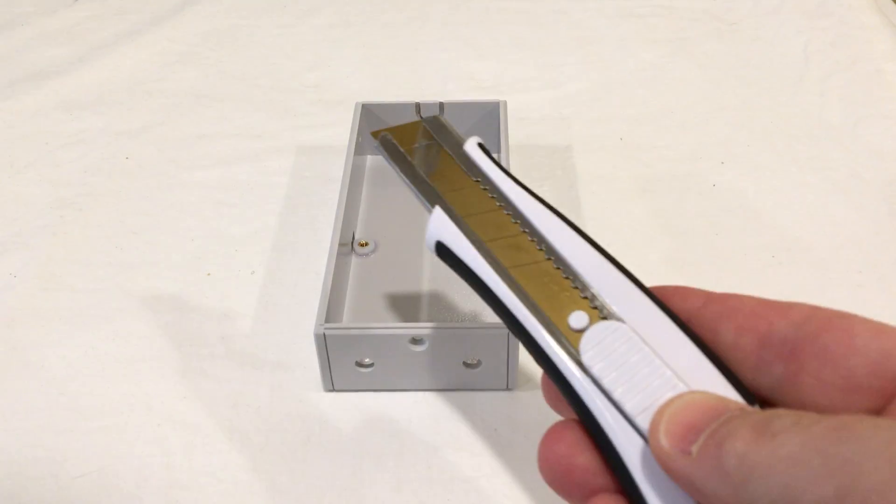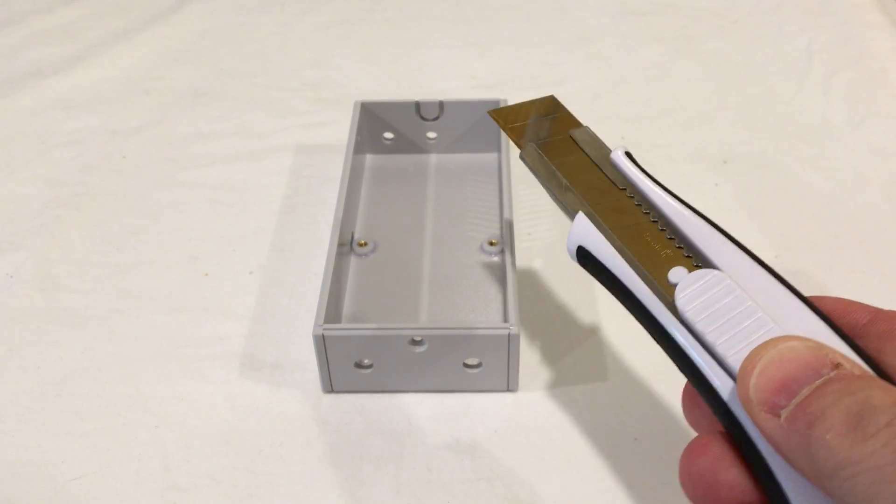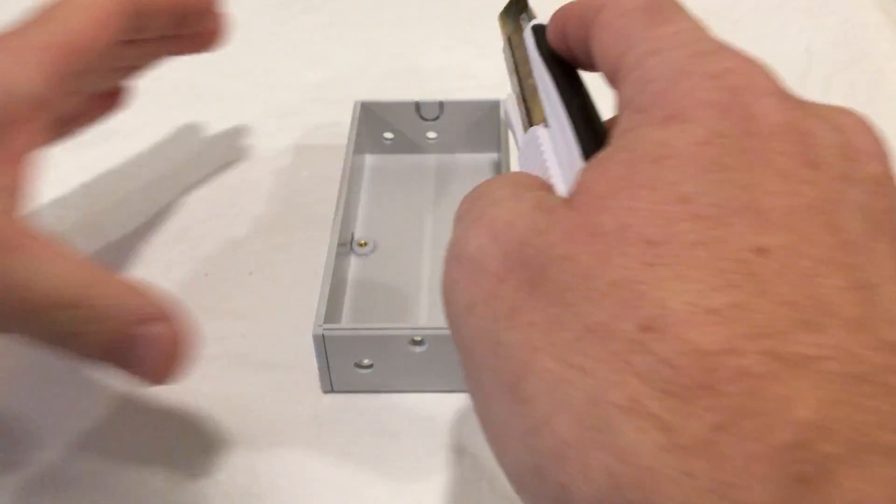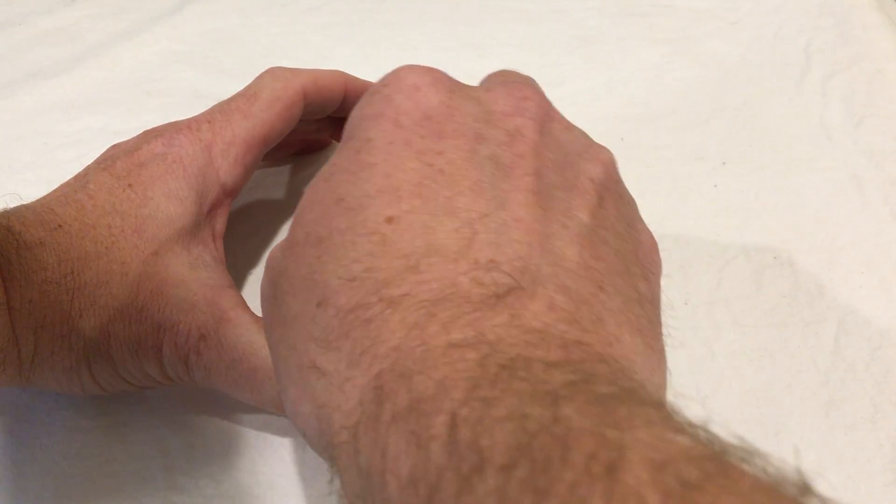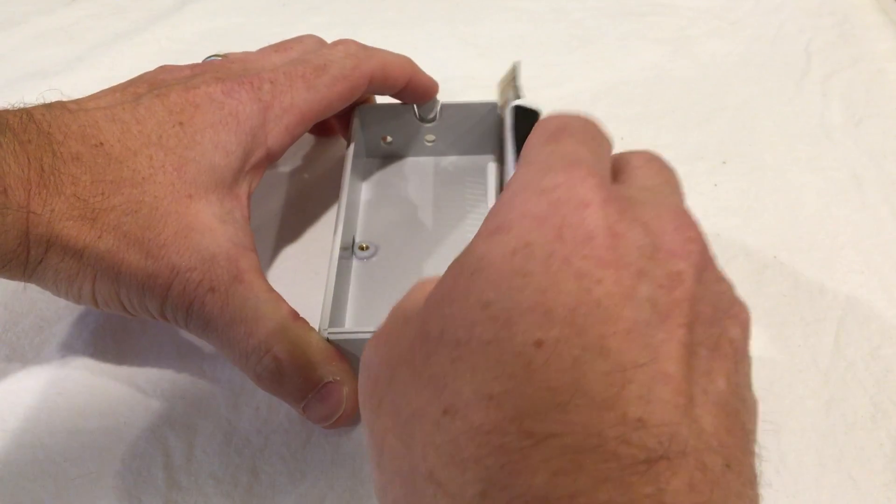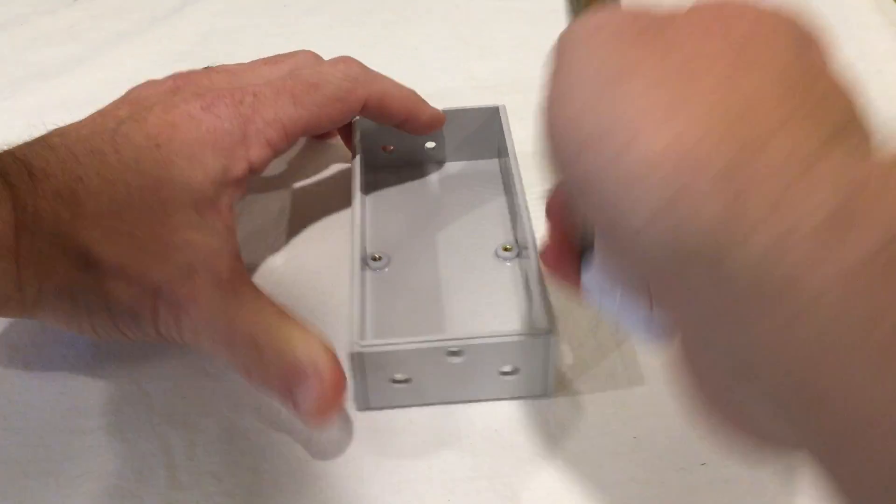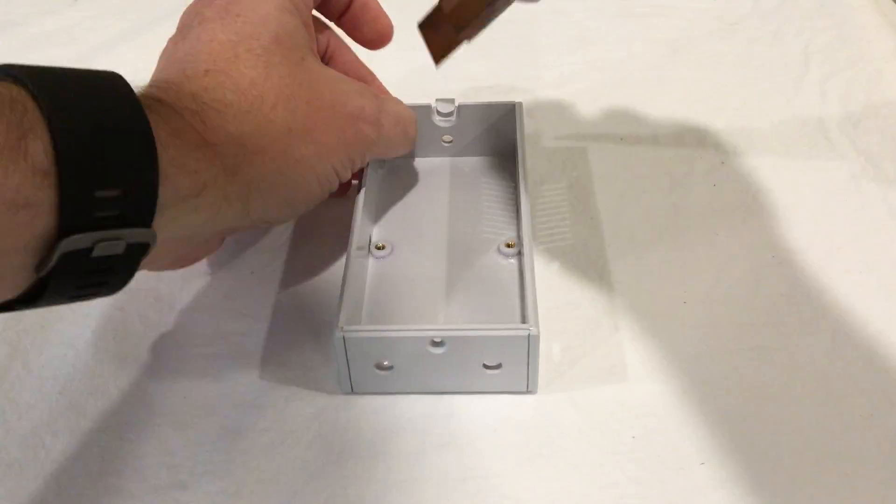So what we're going to do is use a knife to carefully slice that out. Start here, make a cut there and cut there. It's very thin and you can then peel it back a little bit and make a cut across.